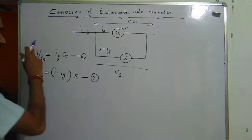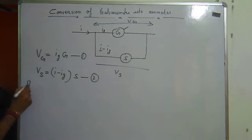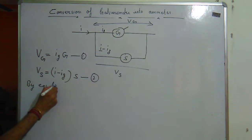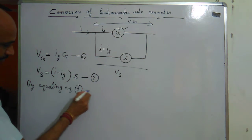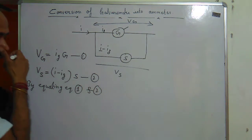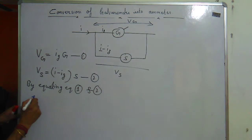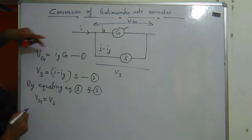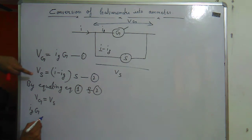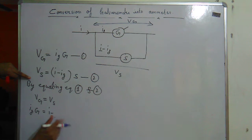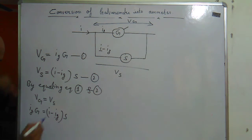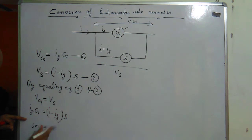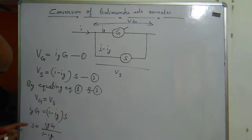We know that both voltages are equal, so equating equation one and equation two, we get Vg equals Vs, which gives us Ig × G = (I − Ig) × S. From here we can directly calculate the value of S. So S equals Ig × G upon (I − Ig). This is the formula to calculate the shunt resistance S if a question asks you to find S.